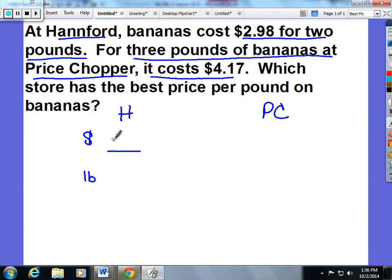Hannaford's original ratio is $2.98 to 2 pounds of bananas. This is considered a rate because you're comparing two different things, money and pounds, but it's still a ratio. Students can scale it down to 1 pound, which is a unit rate. To scale 2 down to 1 pound, you're going to divide by 2. And whenever you do the bottom, you're going to do to the top. So for 1 pound of bananas at Hannaford, it's $1.49.